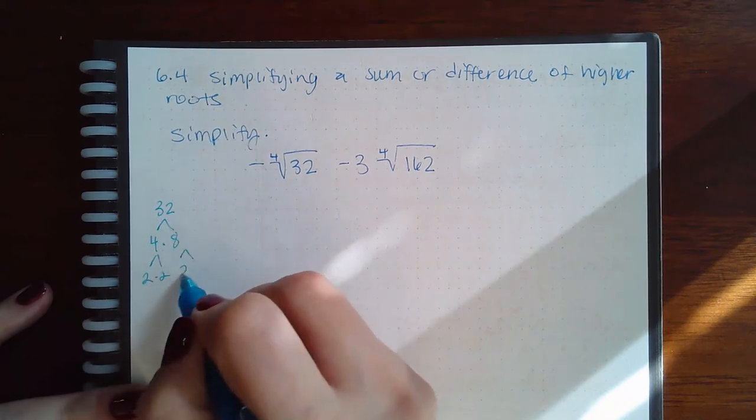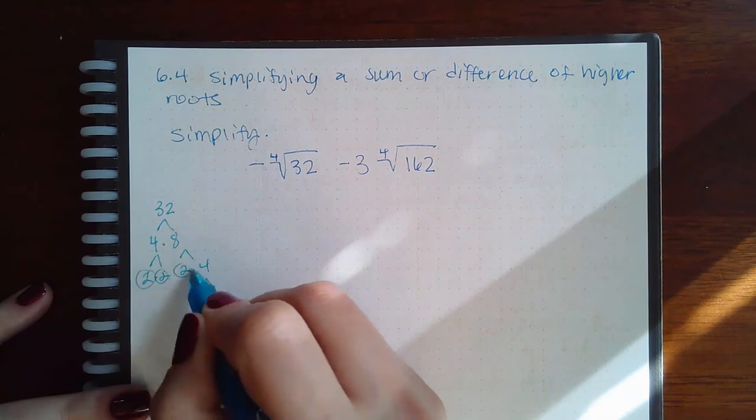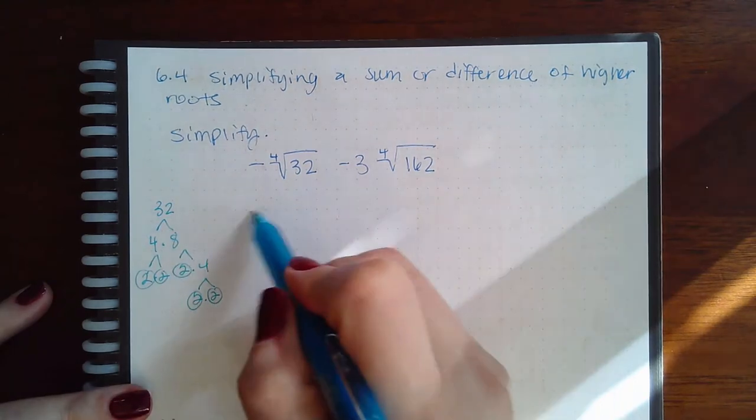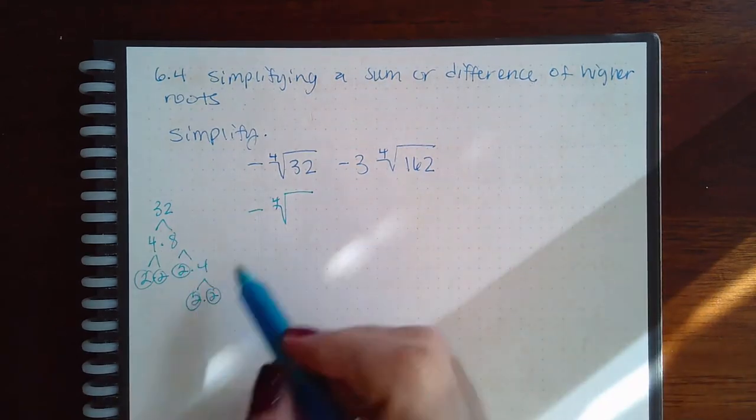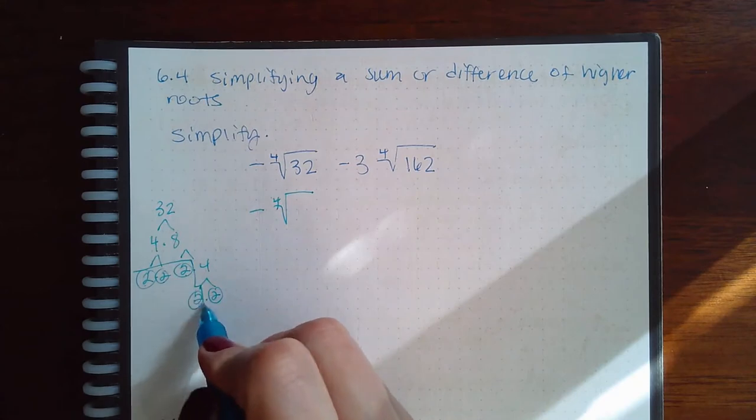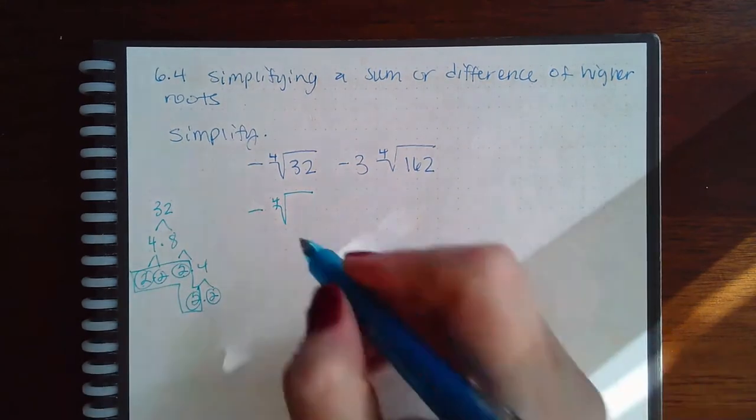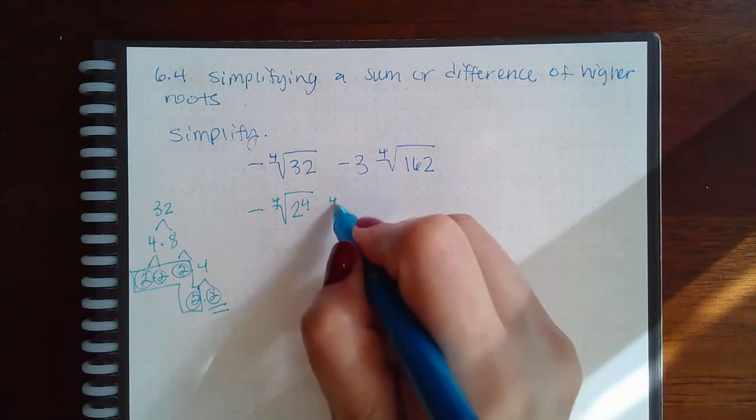So I have all of these primes. Now I'm doing the fourth power, the fourth root, so I need four in order to go in here. So I need one, two, three, four. That's all of these guys, so that's two to the fourth and I have this one left over in its own radical.